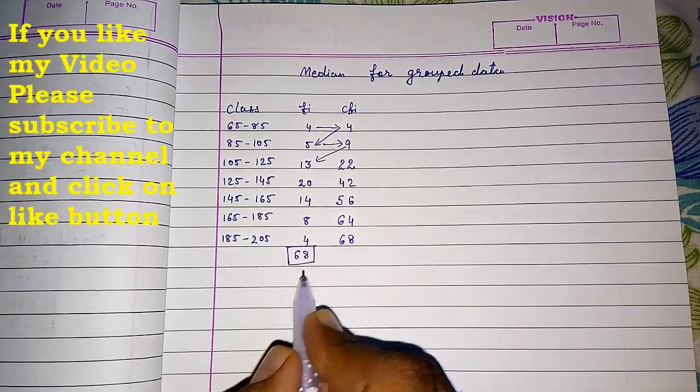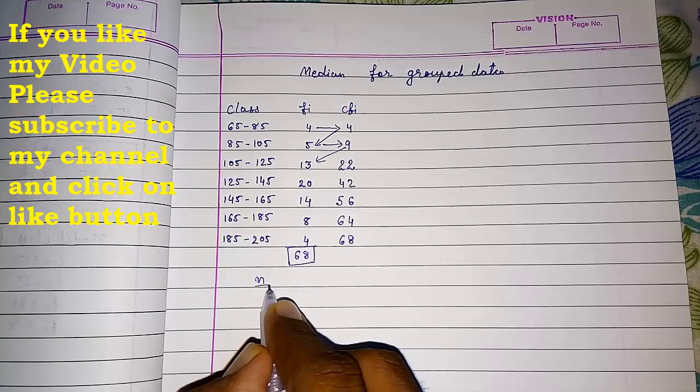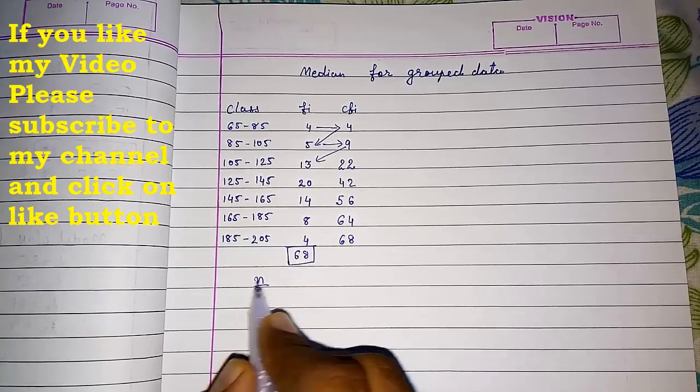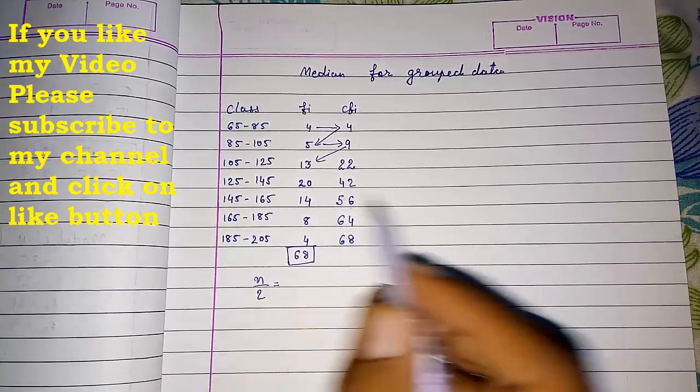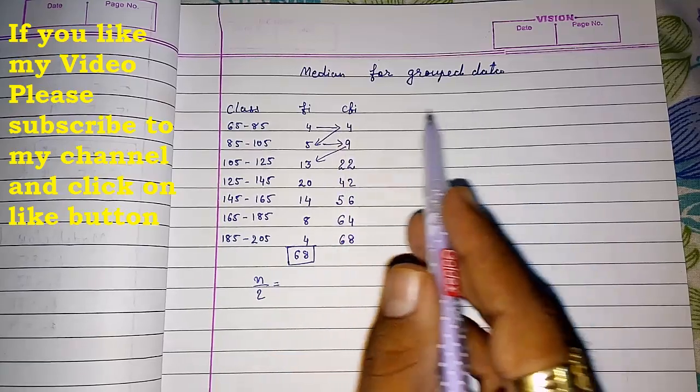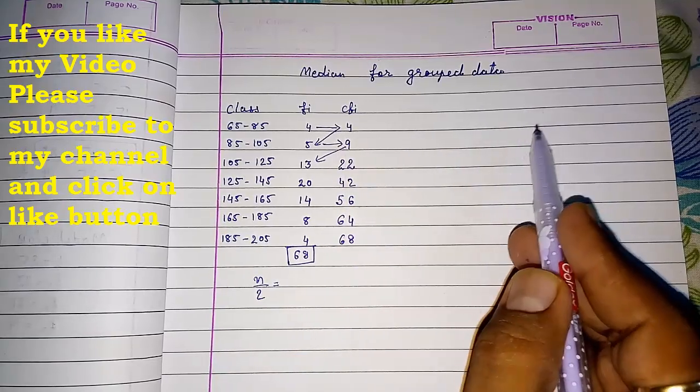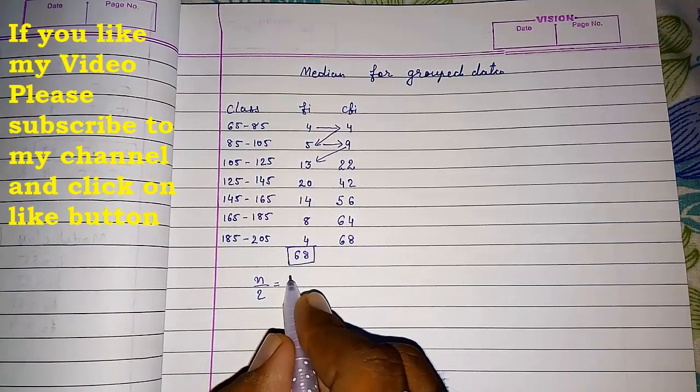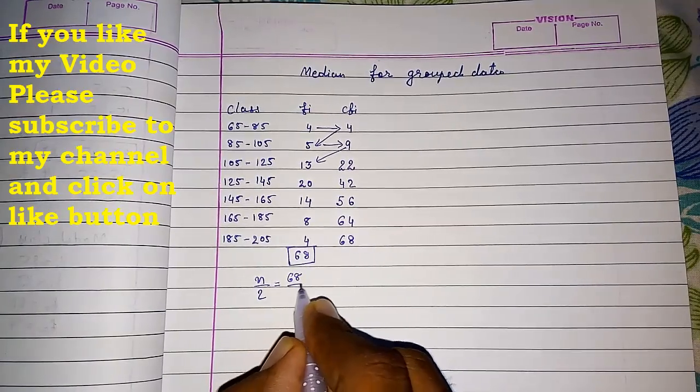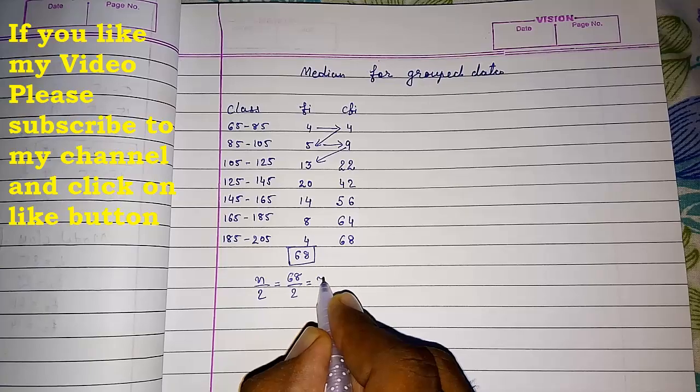Now we have to find n by 2, which means the total frequency divided by 2 to get the middle number. If you want to find the middle number of 10 numbers, 10 divided by 2 gives you 5. Same here, 68 by 2 is 34.